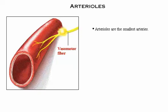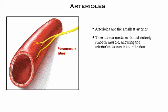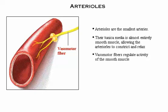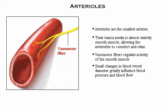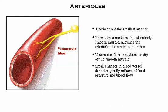Arterioles are the smallest arteries. Their tunica media is almost entirely smooth muscle, allowing the arterioles to constrict and relax. Vasomotor fibers regulate the activity of the smooth muscle. This regulation is crucial because small changes in blood vessel diameter greatly influence blood pressure and blood flow.